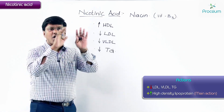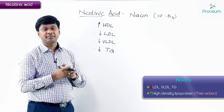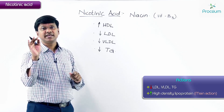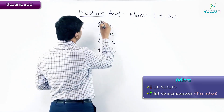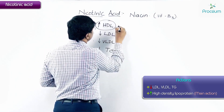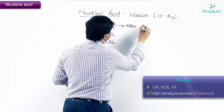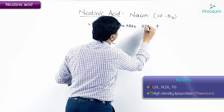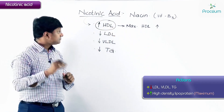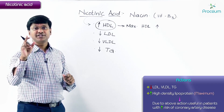Among all the hypolipidemic drugs, niacin has the maximum HDL-increasing property. It has maximum HDL increasing property among all the hypolipidemic drugs.